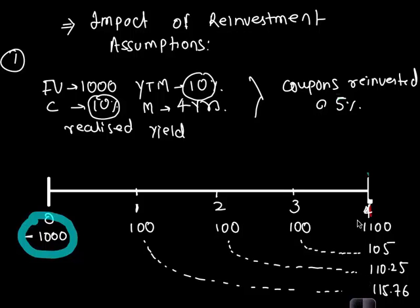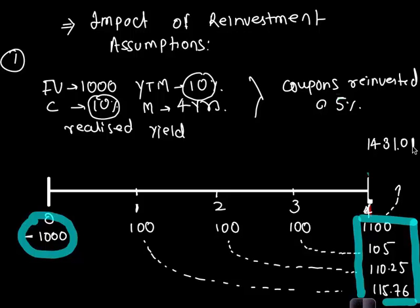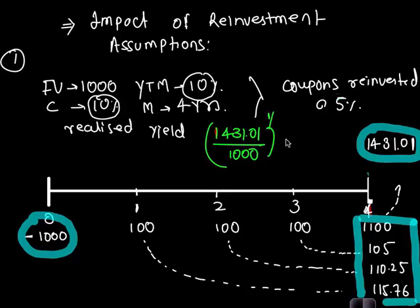So let's take a total of the cash flow that's available with us: 1431.01. So how do you read this? You would say that you invested 1000 at time zero, you did not receive any cash flow up to time four, and at time four you directly received 1431 with an assumption that the coupons were reinvested at 5%. Now let's calculate the realized yield: 1000 negative present value, 1431.01 future value, 4 as N, compute I/Y, or the formula is 1431.01 divided by 1000 raised to 1 by 4 minus 1, which is 9.377%. And is this less than the YTM? Yes, because your reinvestment rate was lesser than the YTM.